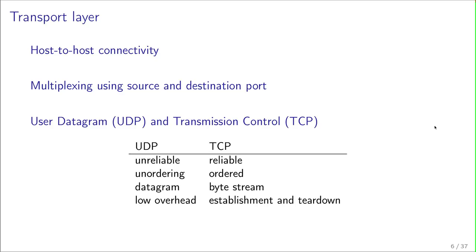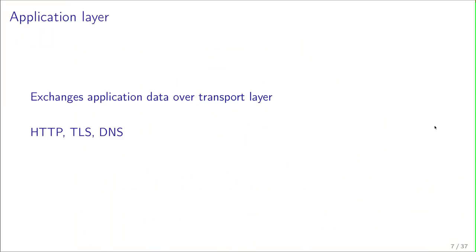Es gibt zwei Protokolle: TCP und UDP. UDP hat einige Vorteile: es ist relativ klein, hat wenig Overhead, lässt sich leicht verarbeiten, ist aber auch unzuverlässig. Die Daten können verloren gehen und die Reihenfolge der Daten ist nicht definiert. TCP hingegen ist verlässlich. Die Daten kommen genauso wieder raus, wie man sie reingesteckt hat. Aber dafür muss auch eine Verbindung aufgebaut werden, und die beiden Endgeräte müssen sich darüber austauschen, wie die Daten übertragen werden.